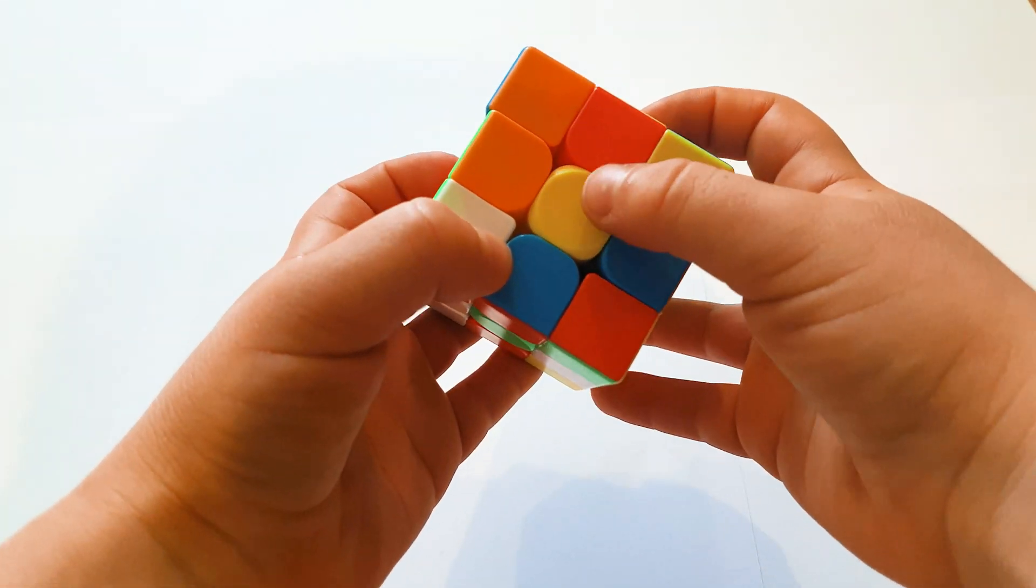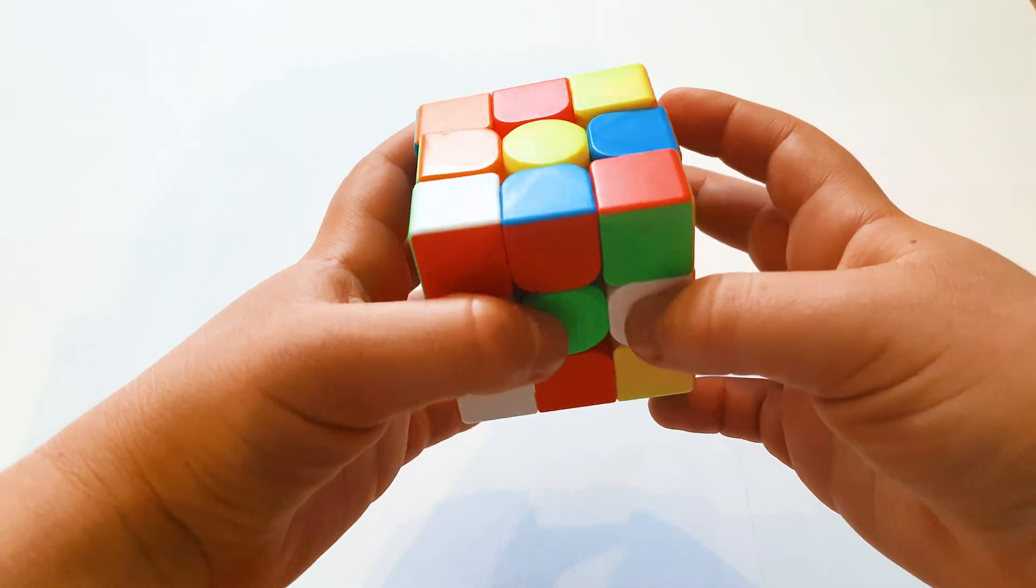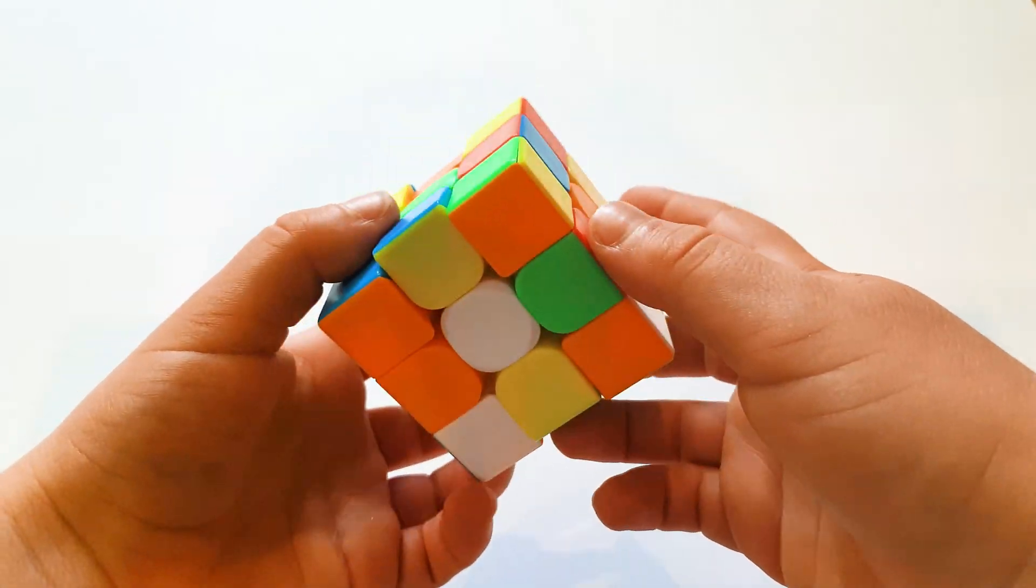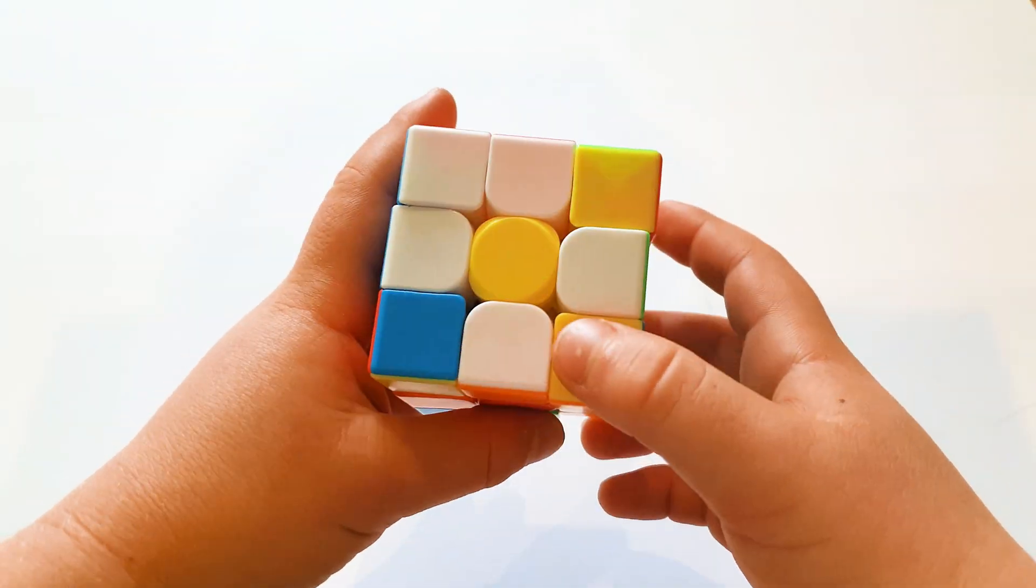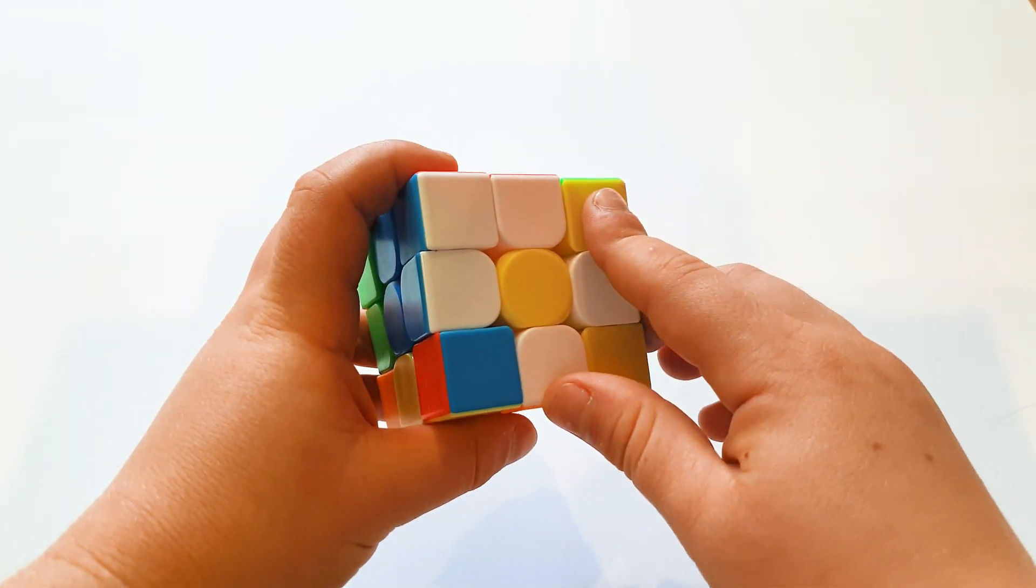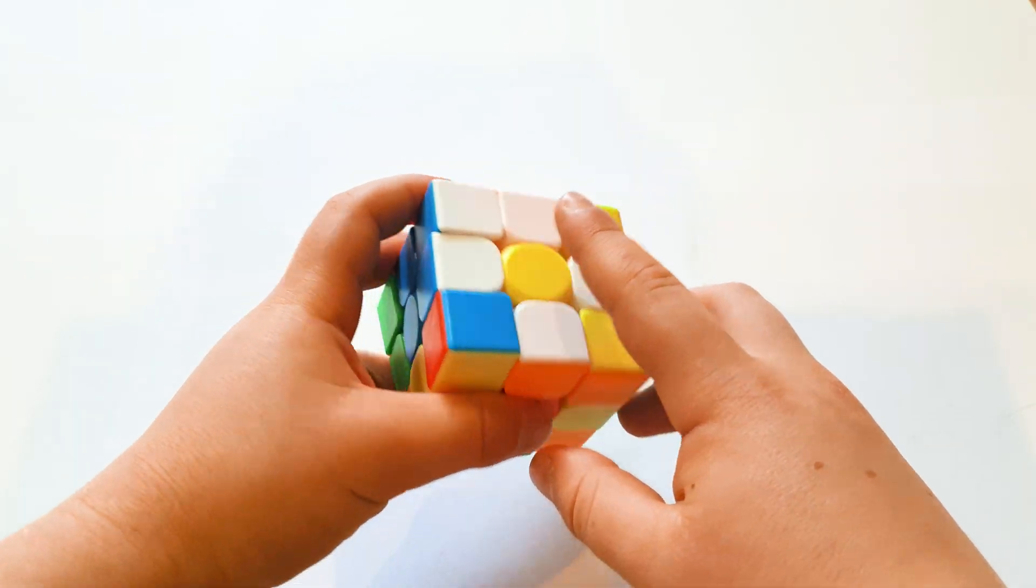All you need to do is surround the yellow center piece with white edge pieces. If you have any corner pieces just ignore them for the moment.